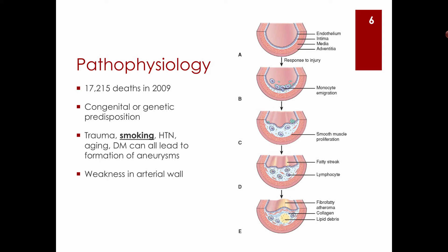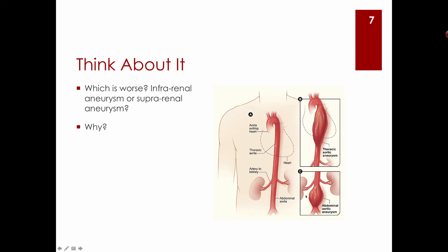The same process occurs: injury to the endothelial layer, monocytes migrate to the site, smooth muscle proliferation, and a fatty deposit forms between the media and the intima — that's the atheroma. This atheroma can weaken the arterial wall, potentially leading to either rupture or dissection.